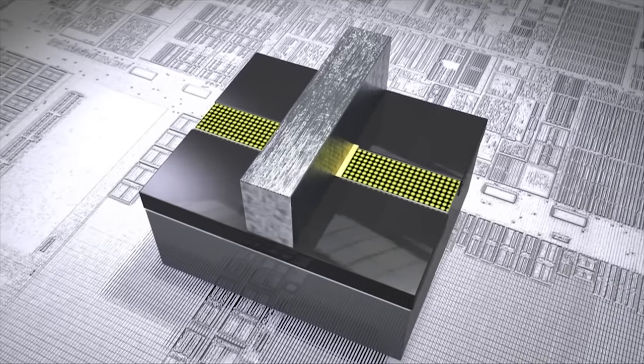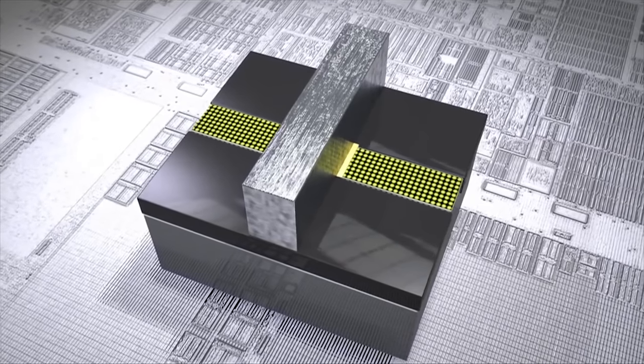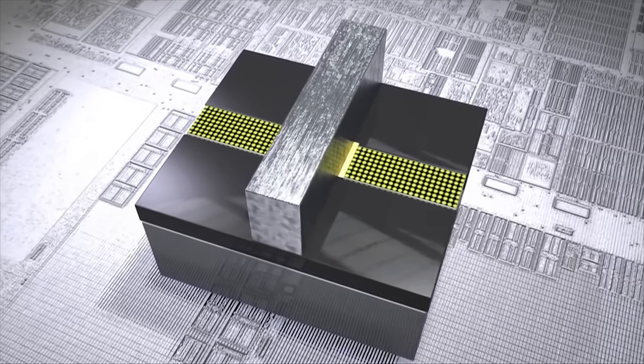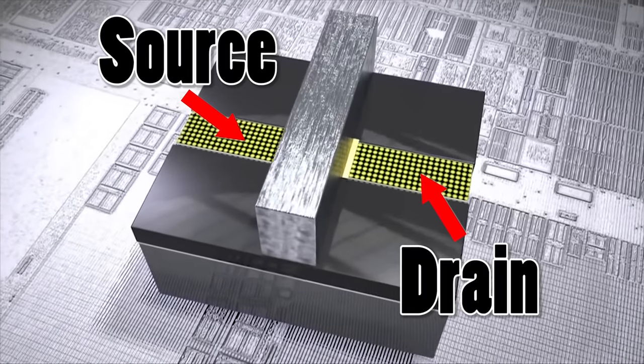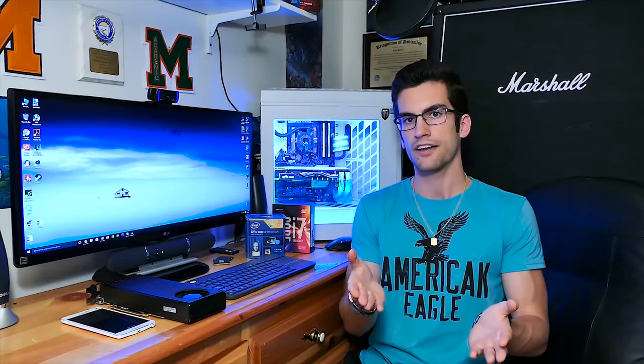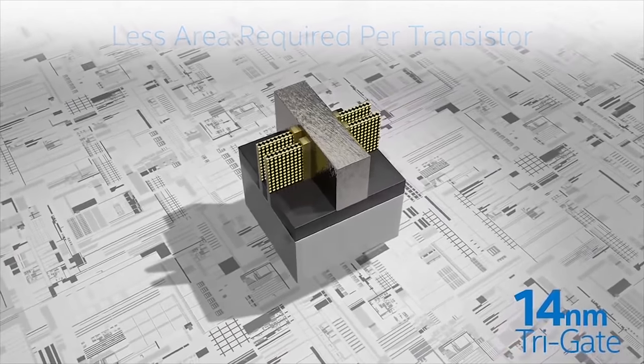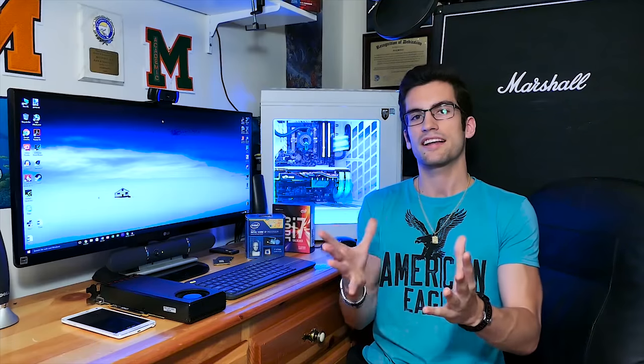This length, by the way, describes the degree of accuracy within a transistor — no specific distance in particular, though you'll hear the distance between the source and drain mentioned quite a bit, which is considerably smaller than the stated process. Here's a clip from one of my previous Minute Science videos clarifying the nomenclature.